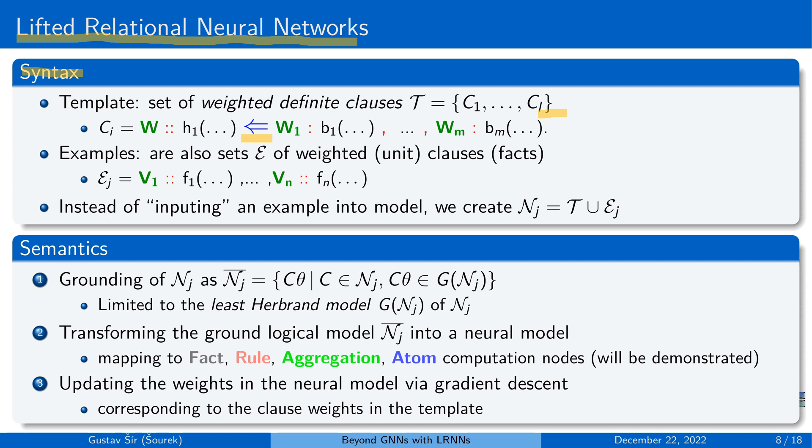And similarly to classic inductive logic programming, the learning examples are also expressed in the weighted logic. Most common are sets of weighted facts. And then instead of inputting an example into a model, as we know from classic machine learning, we just merge these two representations together and interpret the result as a neural network.